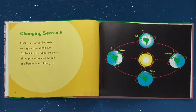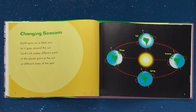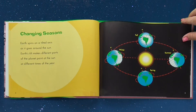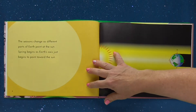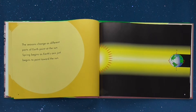Changing seasons. Earth spins on a tilted axis as it goes around the sun. Earth's tilt makes different parts of the planet point at the sun at different times of the year. The seasons change as different parts of Earth point at the sun. Spring begins as the Earth's axis just begins to point toward the sun.